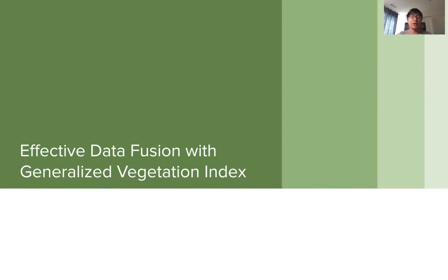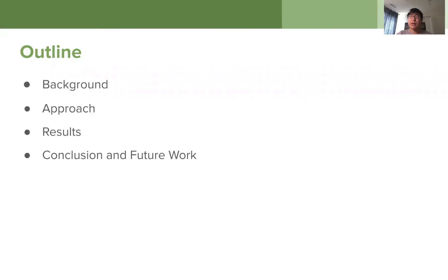Hi, everyone. Today I'm going to talk about our work Effective Data Fusion with Generalized Vegetation Index. There's going to be four parts of this presentation. I'm going to first talk about the background, like how we were motivated to tackle this problem, and then our approach, basically the generalized vegetation index and adaptive group normalization. I'm going to present the results very quick and talk about the conclusion and future works.